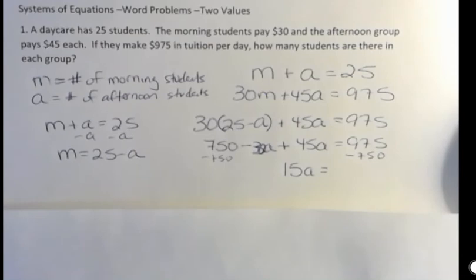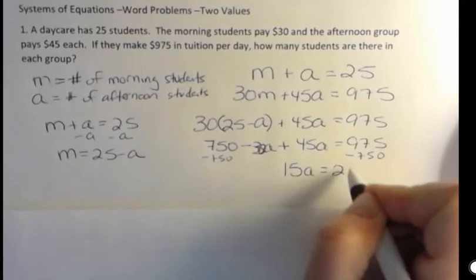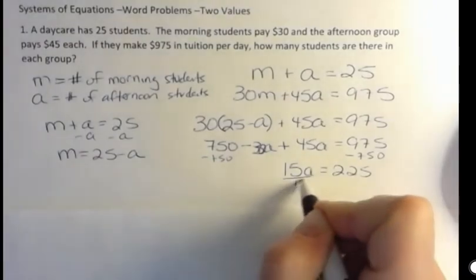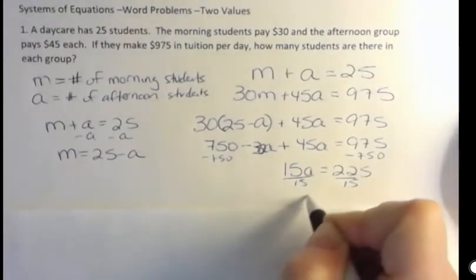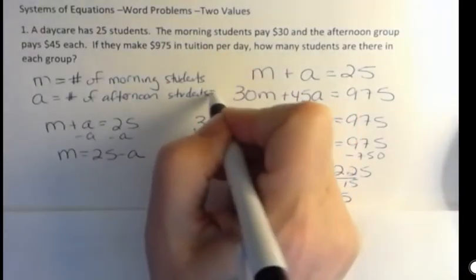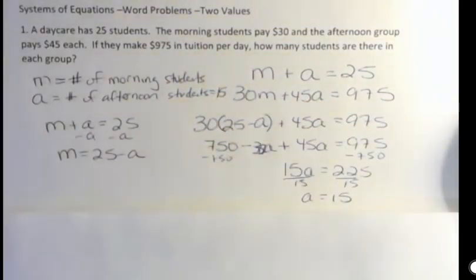Excuse me, 975 minus 750 is 225, which looks like it's going to go nicely, 15 times. Divide both sides by 15 and you get A equals 15. That means that there are 15 students in the afternoon because I said A is the number of afternoon students and that's 15.